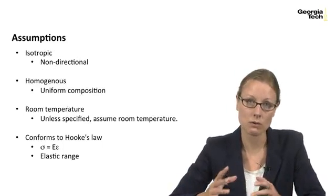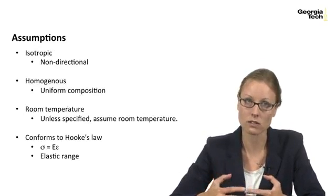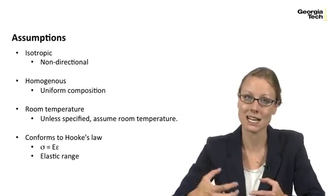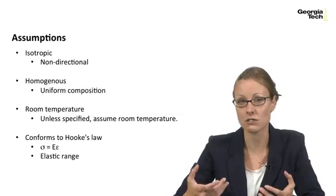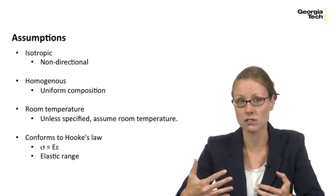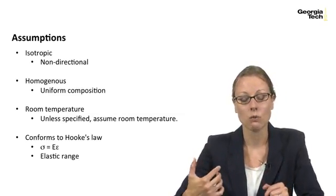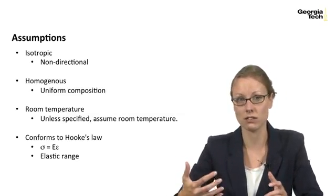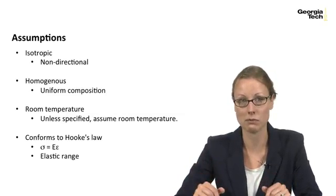Some assumptions that we're going to make in this module and throughout this course: first, we're dealing with an isotropic material. Isotropic means non-directional. For example, steel is an isotropic material and its density, its strength, and its modulus of elasticity don't vary depending on the direction that you're loading it in. Whereas bone and certain composites tend to be very anisotropic materials and can have very different material properties depending on the direction and type of loading you're applying.